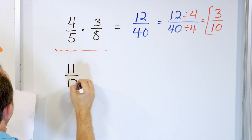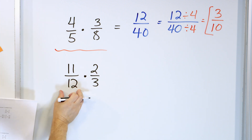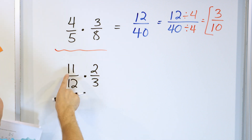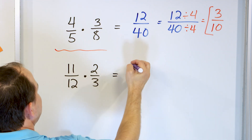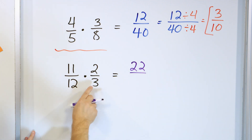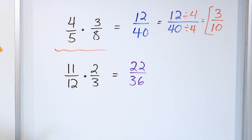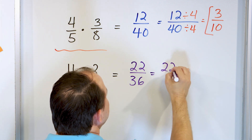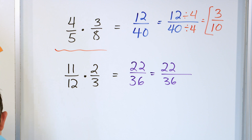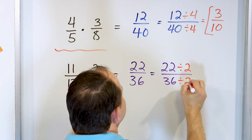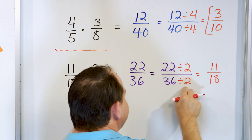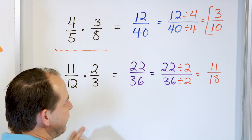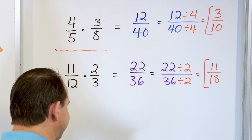Let's take eleven twelfths multiplied by two thirds. We're taking the first amount and chopping it down by two thirds — cutting it into three equal pieces and keeping two. Multiply eleven times two to get twenty-two for the numerator, and twelve times three to get thirty-six for the denominator. These are both even numbers, so we simplify by dividing by two: twenty-two divided by two is eleven, thirty-six divided by two is eighteen. The final answer is eleven eighteenths.